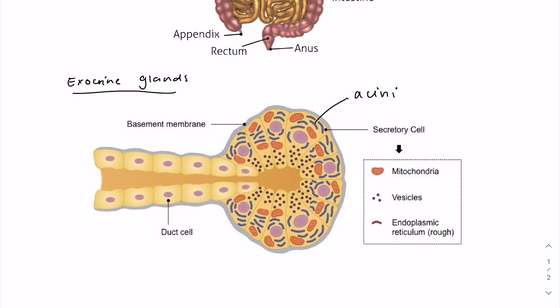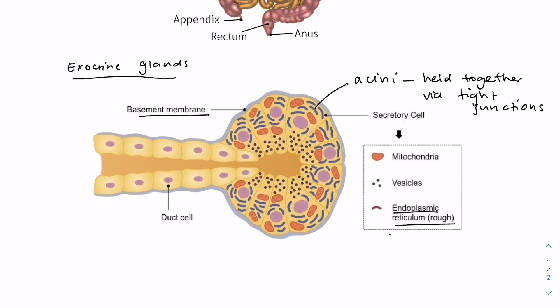The acini are surrounded by a basement membrane and are held together by tight junctions. The acini also have lots of endoplasmic reticulum, and they also have a lot of Golgi apparatus. This is because these organelles are involved in the processing, packaging, and export of different proteins — for example, enzymes for digestion. They also have lots of mitochondria, which are able to respire aerobically to produce lots of ATP and power the active transport involved in the secretion of such substances.